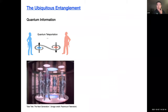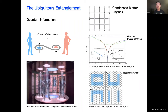We know that entanglement is a very important concept in many fields of physics. In the quantum information community it is considered a valuable resource for quantum information tasks such as teleportation — if Alice and Bob share a pair of maximally entangled qubits they can teleport an unknown quantum state. In condensed matter physics, entanglement behavior can indicate quantum phase transitions or the emergence of topological order.